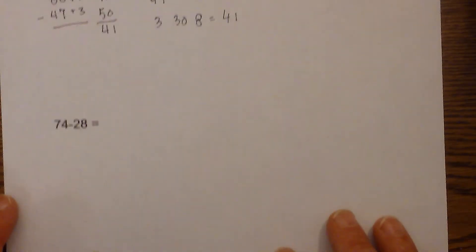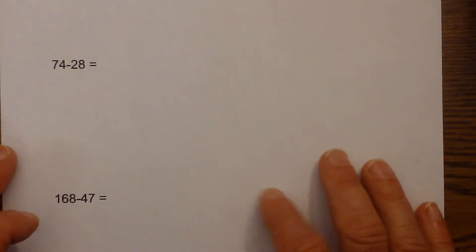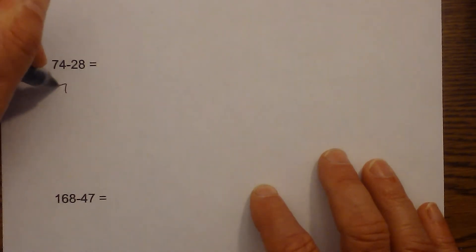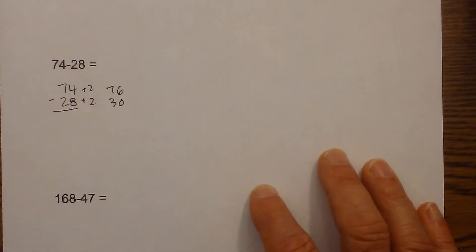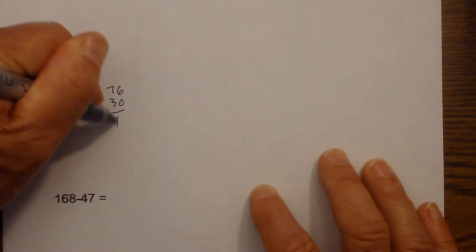I will do the same technique again on this problem. I am going to rewrite it. 74 minus 28. I am going to round 28 to 30 by adding 2. So this becomes 30 and this becomes 76 because I have added 2 to 74. And then 76 minus 30 is easy. That is just 46.